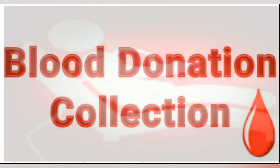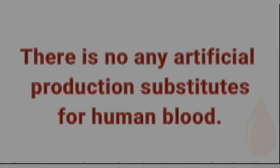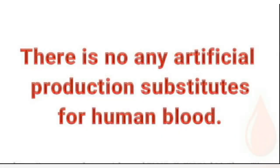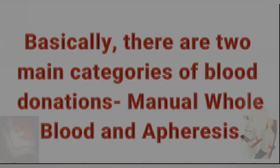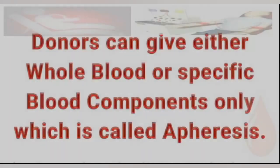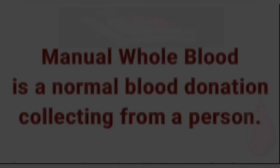Blood donation collection types. There is no artificial production or substitute for human blood. Basically, there are 2 main categories of blood donations: manual whole blood and apheresis. Donors can give either whole blood or specific blood components only, which is called apheresis.